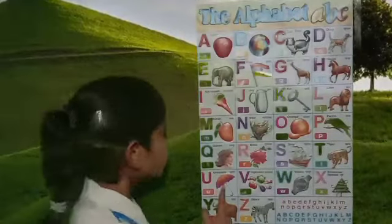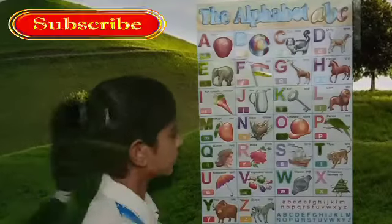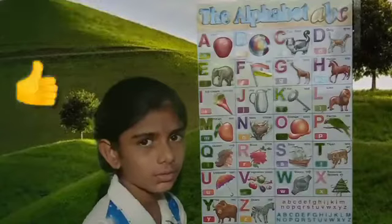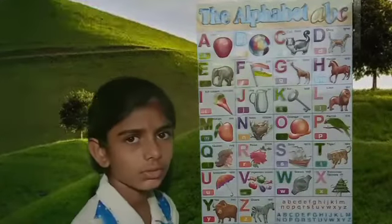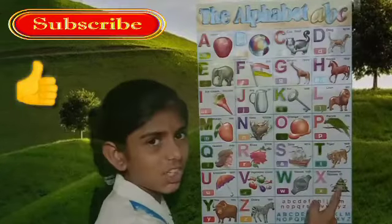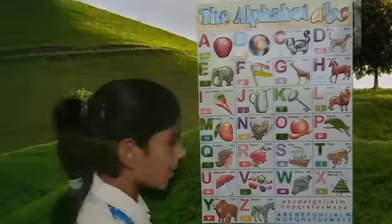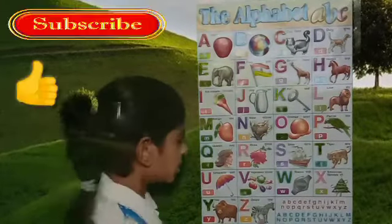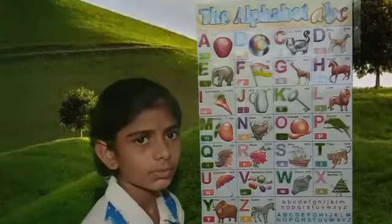U for umbrella, B for vegetables, W for horse, W for horse, X for S for 33, Y for yard, Z for zebra.